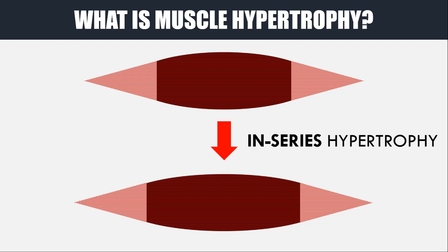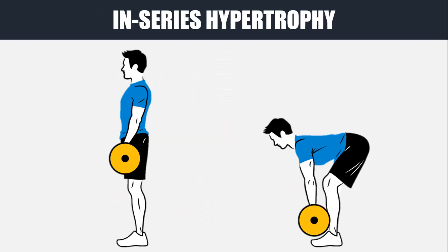For example, an athlete who achieves in-series hypertrophy of the hamstring muscles has been shown to be at a reduced risk of hamstring strain injury during sprinting. Furthermore, in-series hypertrophy can help to increase mobility due to the muscles being structurally longer. For many athletes and trainees, this may be something that is sought.